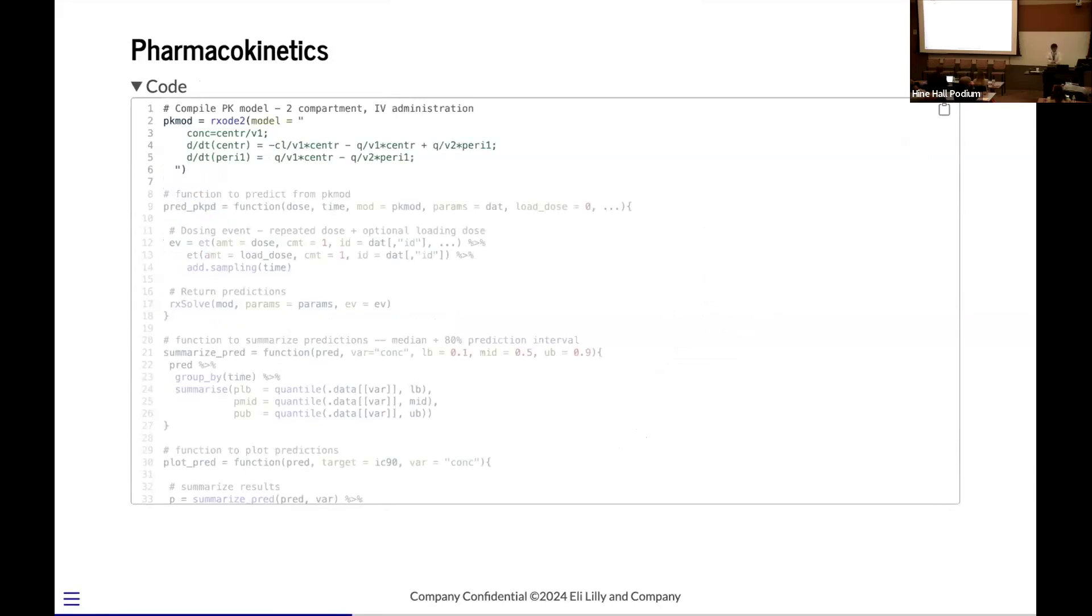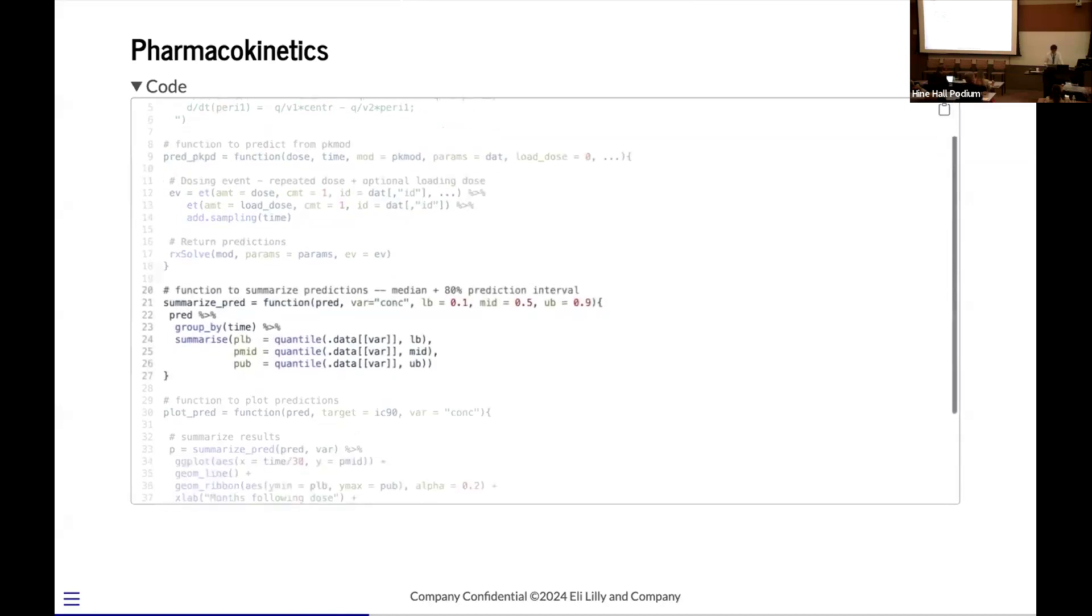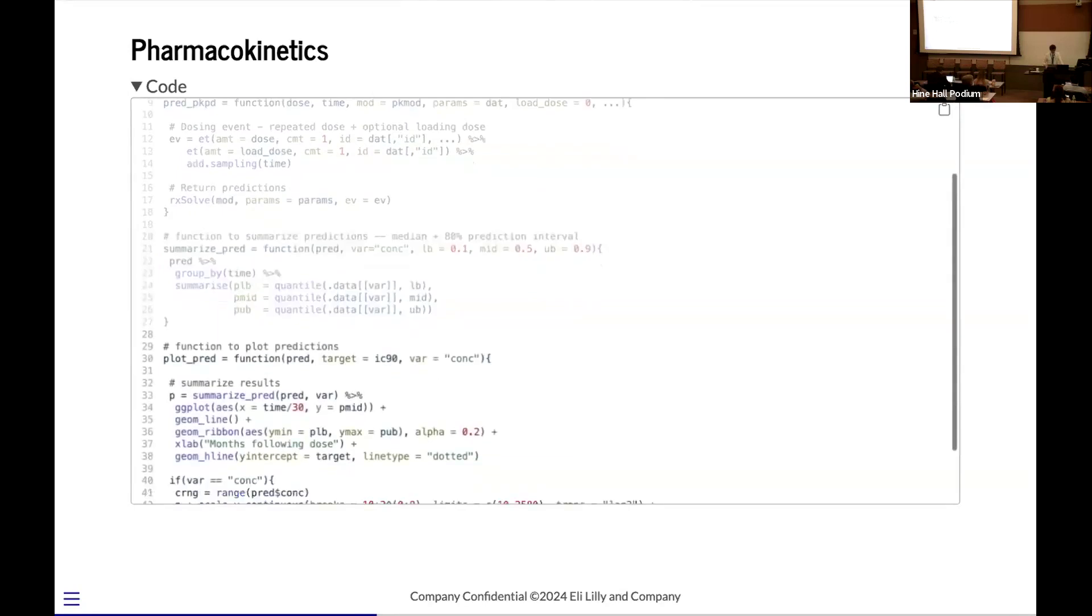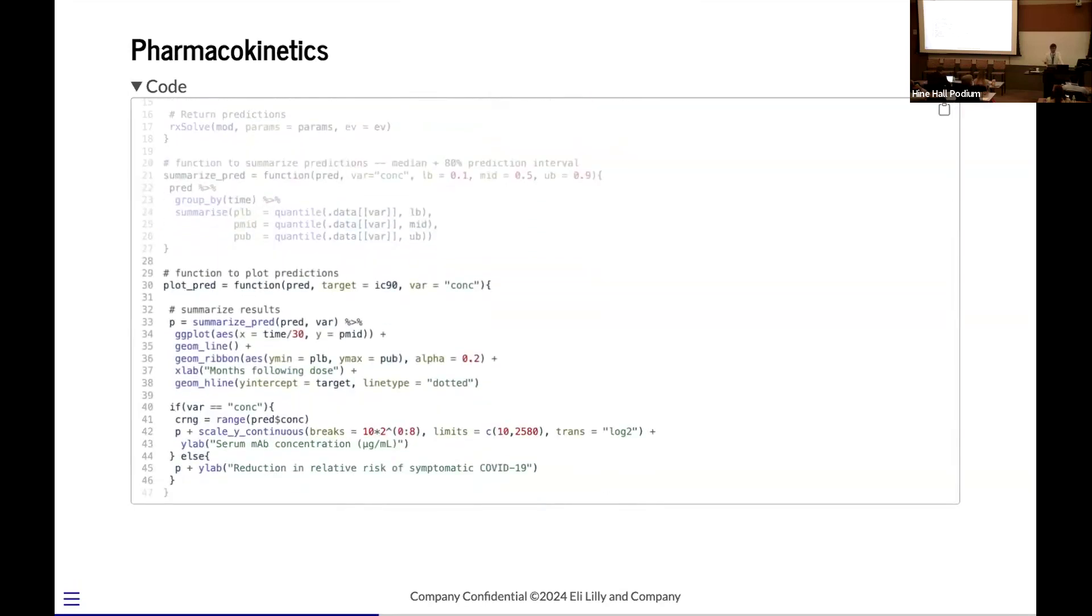To implement the model, we're using RxODE. Sorry to all the Metram folks. But this is how you would implement it within the set of ODEs. I don't think there's anything particularly surprising to anyone here. We're also writing a function here to predict the responses. This is just taking in dose and a number of time points and returning the predicted output. We're also going to be interested in summarizing the output. We want to know what the median prediction is. We want to know what the upper and lower bounds, so specifically looking at 80% prediction intervals. So 10th and 90th percentiles are what are going to be calculated by default.